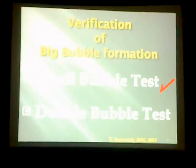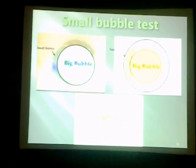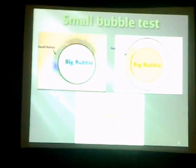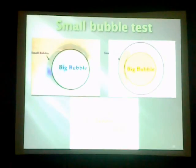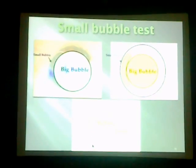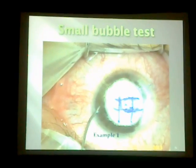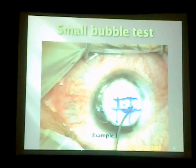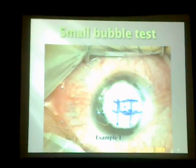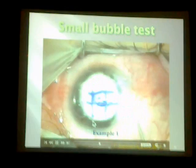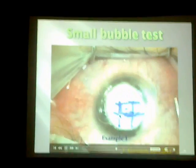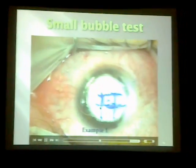To be sure that you have the big bubble, you perform what is called the small bubble test. The idea is injecting air into the anterior chamber; the air will be trapped in the periphery of the anterior chamber because the center is occupied by the bubble. Just inject a small amount of air, and you will find it is trapped peripherally and does not go to the center of the anterior chamber.